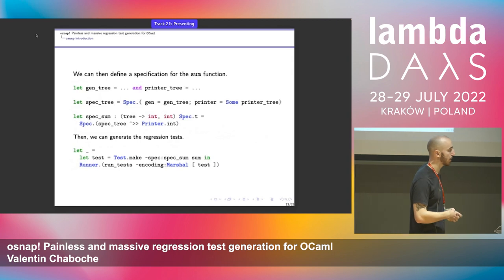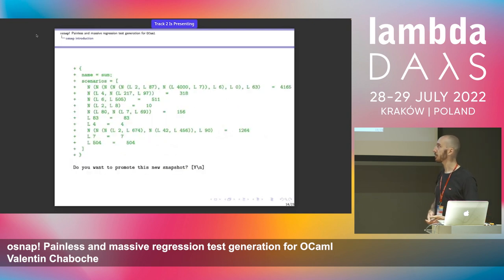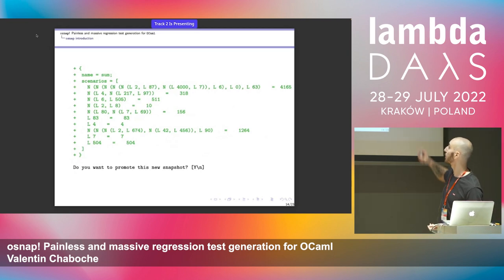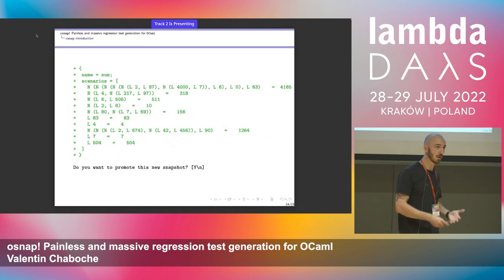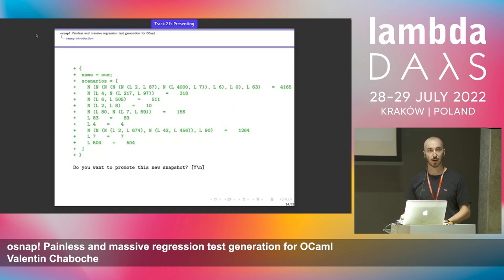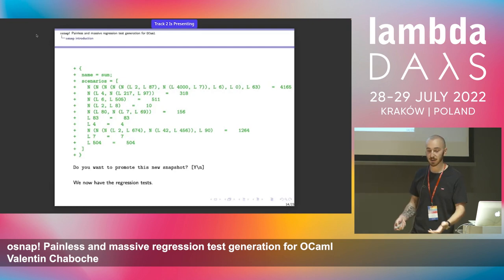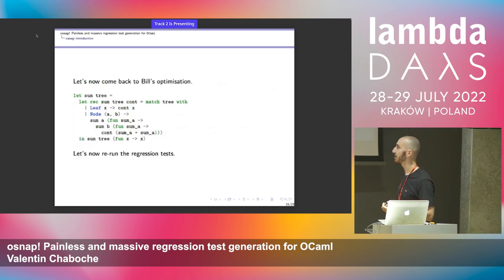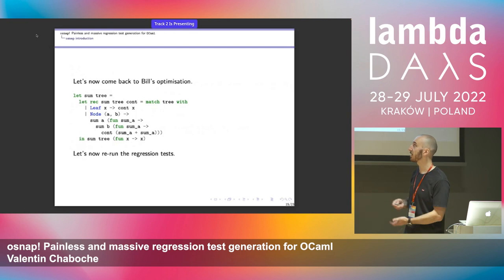Let's say the original implementation of sum is what I believe to be true — I'll create a regression test on this function. The tool will generate a lot of inputs randomly, store the outputs of the function, and ask you if you want to promote the snapshots, i.e., take a snapshot of the actual state of the function. Since the function has been there for years, we trust the inputs and outputs and promote them on disk. Now you have the regression tests, and Bill could have run them in CI.